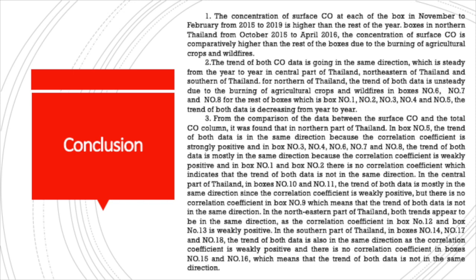Second, the trend of both carbon monoxide datasets is going in the same direction, which is steady from year to year in the Central, Northeastern, and Southern parts of Thailand. For the Northern part of Thailand, the trend of both datasets shows uncertainty due to the burning of agricultural crops and wildfires, particularly in boxes number 6, 7, and 8. For boxes number 1 through 5, the trend of both datasets is decreasing from year to year.